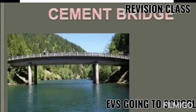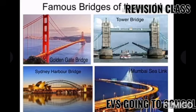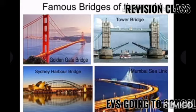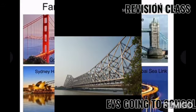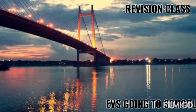Some famous cement bridges in the world — you can see in the pictures: Golden Gate Bridge, Tower Bridge. Observe the pictures carefully, students. Sydney Harbour Bridge. Mumbai Sea Link — a very beautiful picture you can observe here. And in Kolkata, you can find bridges such as Howrah Bridge, Vidyasagar Setu, and Vivekananda Setu.